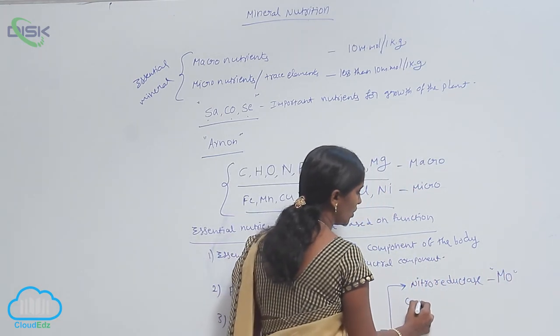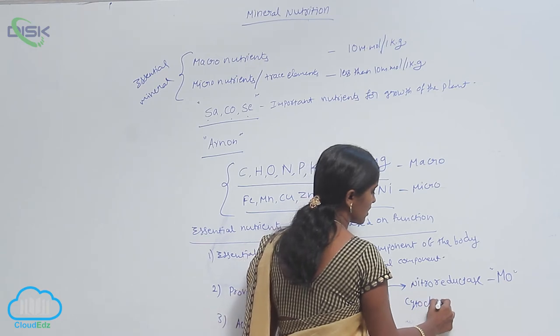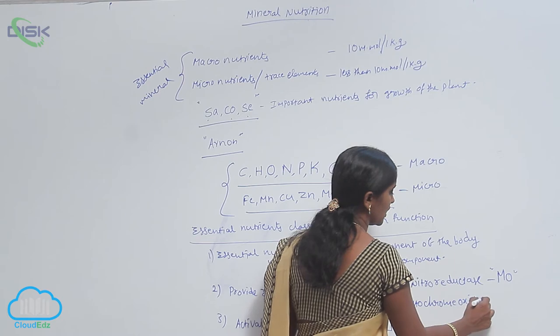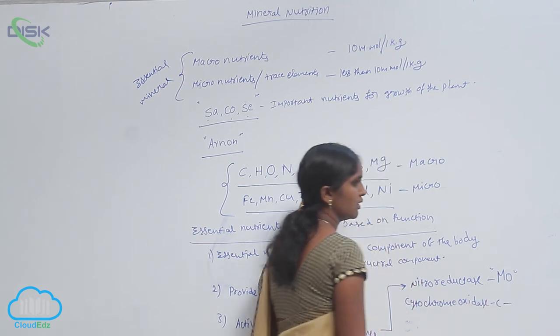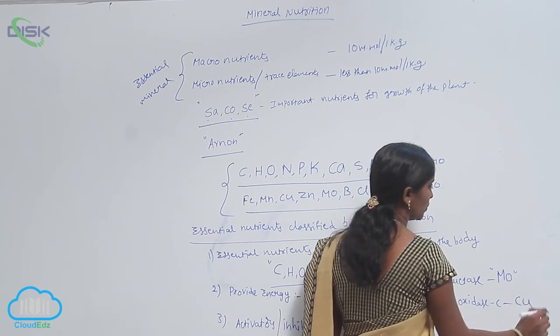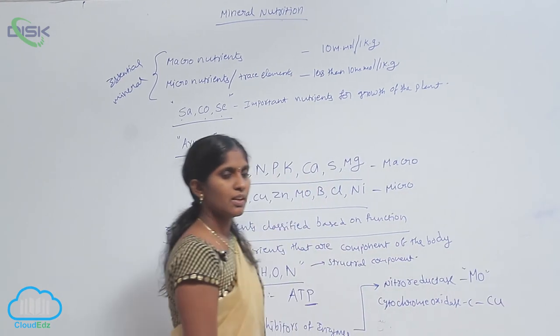Cytochrome oxidase C - here the metal ion is Cu (copper).